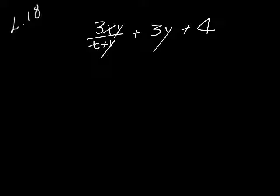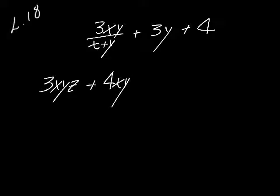Like terms means that they are alike. What makes a term alike is if the letters are the exact same. If I'm trying to add that to that, I can't do it because I do not have a Z in my second term. So these cannot be added.